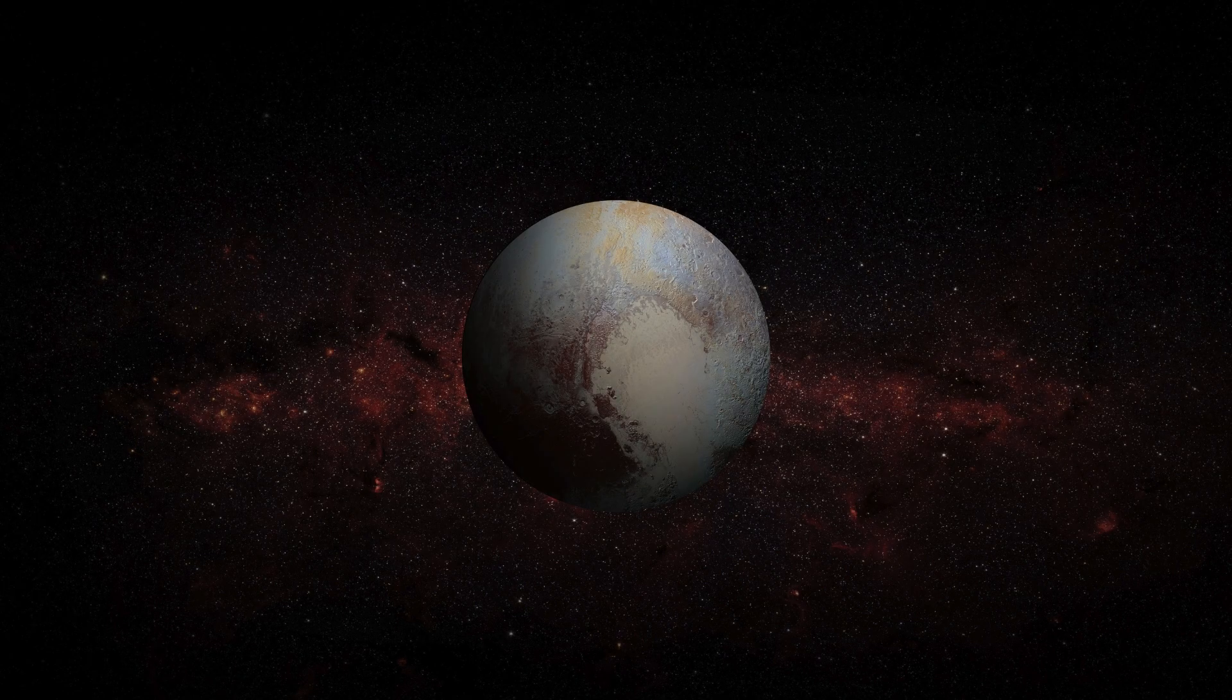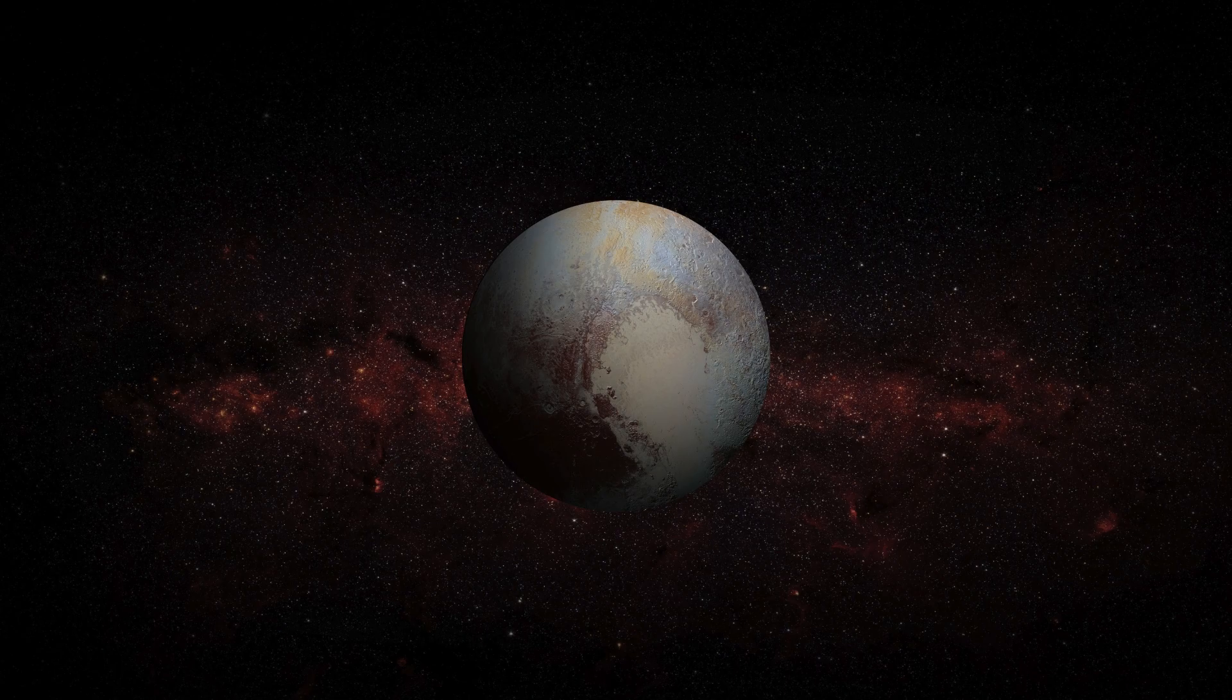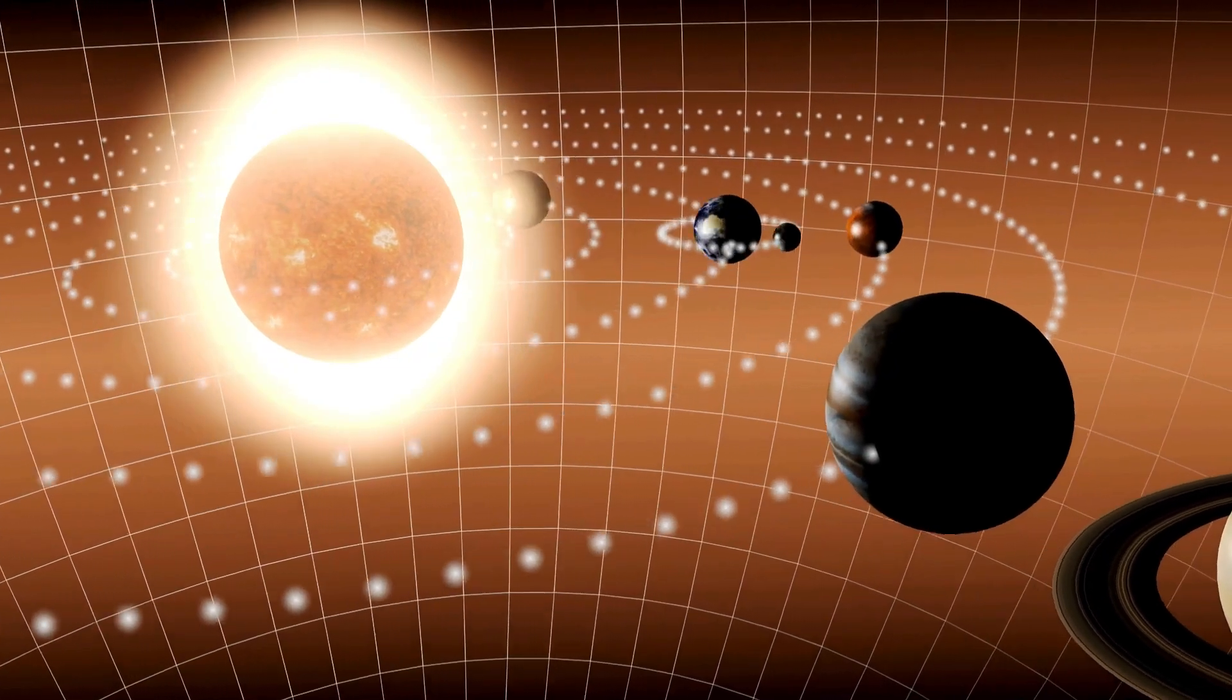In Pluto's case, the Kozai oscillation explains why its orbit around the Sun is so unusual. Despite its seemingly erratic path, this oscillation helps keep Pluto moving smoothly for billions of years.